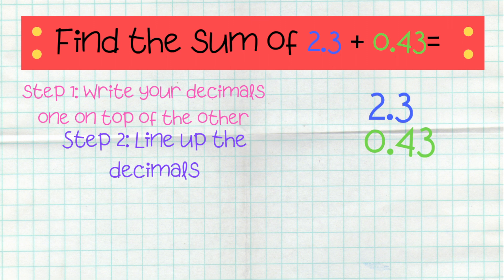Step two is line up the decimals. As you can see, I have the decimal and I have my two wholes and my zero wholes. And then, I have my three-tenths lined up with my four-tenths. And I have my three-hundredths.